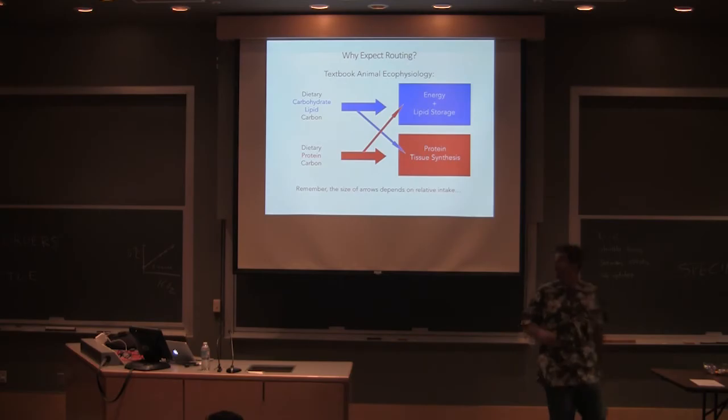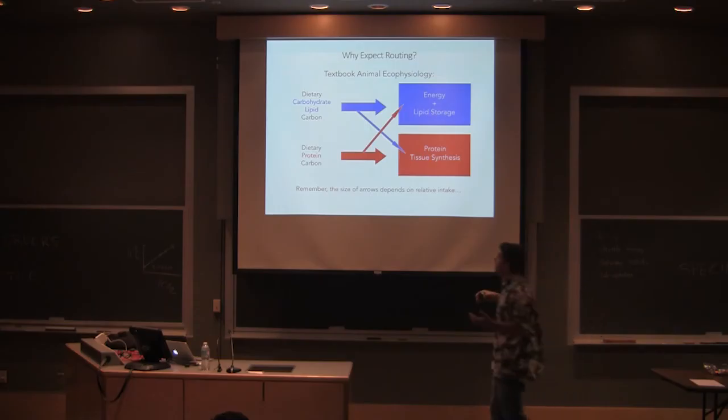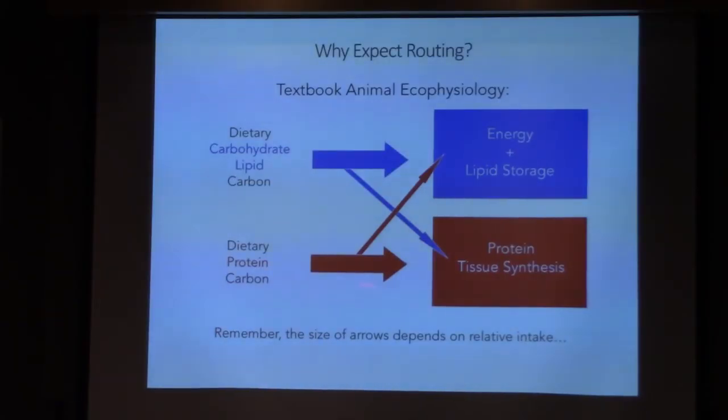This kind of gets to your question. So traditional textbook animal ecophysiology will say, okay, dietary carbohydrates and lipids go mostly to energy and lipid storage. You build fats with them because you need that energy at a later date, or you use them to do work, right, like glycolysis for example. The dietary protein largely gets routed into protein tissue synthesis. This arrow is big, right? And not very much of it goes to energy.